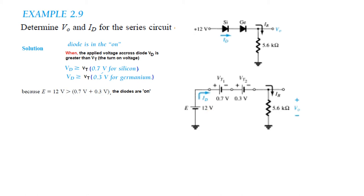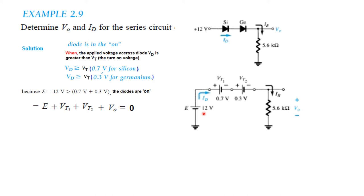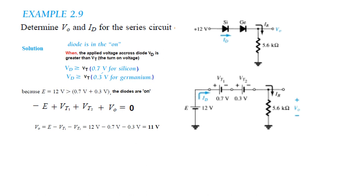We ensure that supply voltage is greater than the total diode voltage: 12V is greater than 0.7V plus 0.3V, so both diodes are ON. Applying KVL: minus E plus VT1 plus VT2 plus V0 equals 0. Therefore V0 equals E minus VT1 minus VT2. E is 12V, VT1 is 0.7V, VT2 is 0.3V, so output voltage V0 equals 11V.